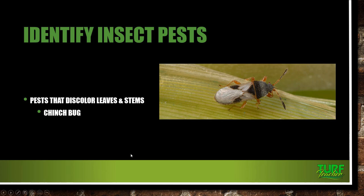Pests that discolor our leaves and stems — here is the chinch bug. We looked at that in figure 3-1. The hairy chinch bug is small, about a fifth of an inch. They're black and white bugs with sucking mouthparts. They are associated mainly with cool season grasses, especially fine fescues and perennial ryegrass. The southern chinch bug does not survive heavy freezes in the triad, but is most commonly associated with Bermuda grass and St. Augustine grass. Most of them have become resistant to common insecticides.